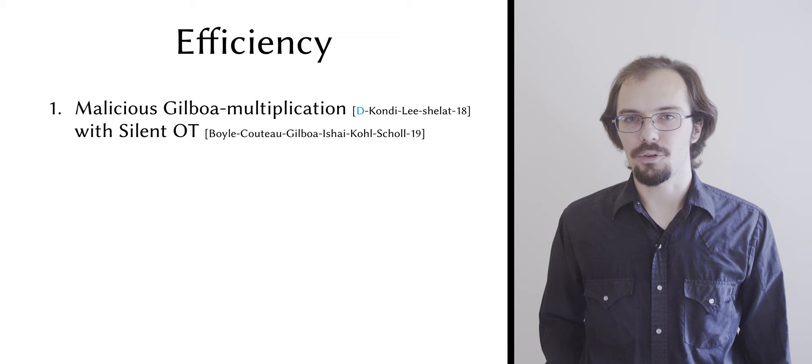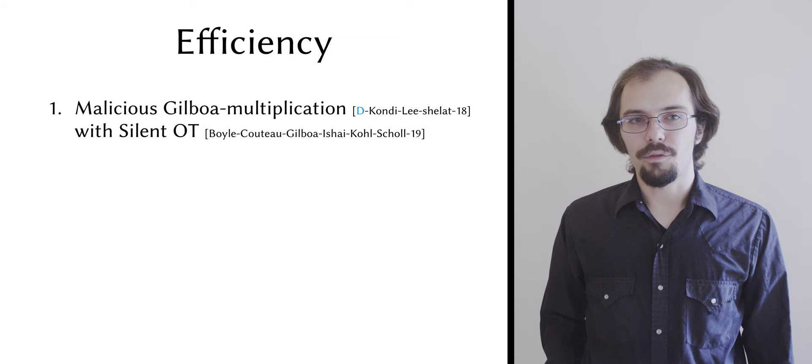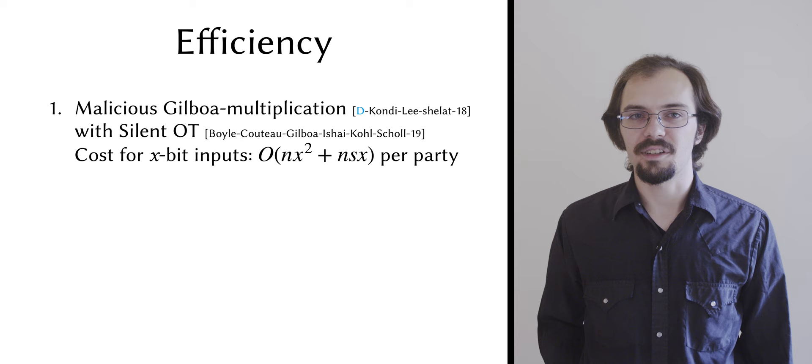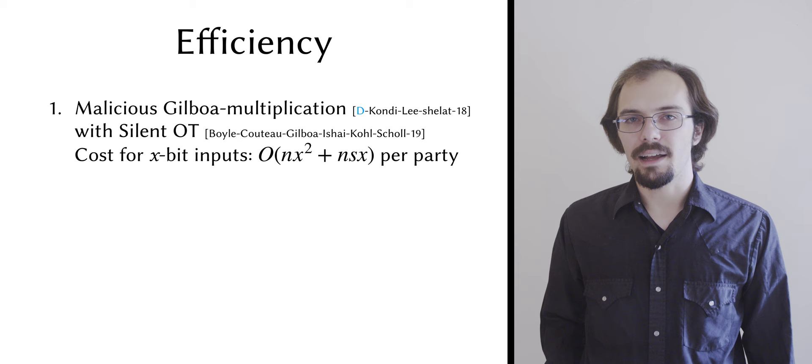But the multiplier construction itself requires a special encoding scheme, which means that it has communication cost in O of nx squared plus nsx per party for n parties and x bit inputs, where s is the statistical parameter. This leads to an overall communication complexity in O of nsk for sampling and modulus construction.